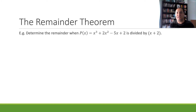Rather than doing all that polynomial division to find our remainder, we can just substitute in a and that tells us our remainder right away. Let's use that in an example: determine the remainder when p(x) = x³ + 2x² − 5x + 2 is divided by x + 2.